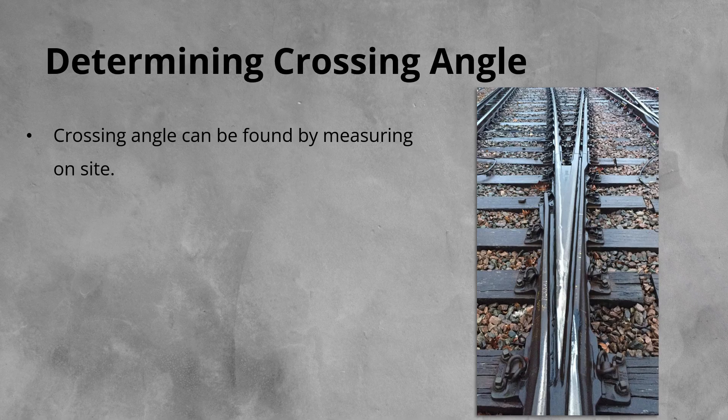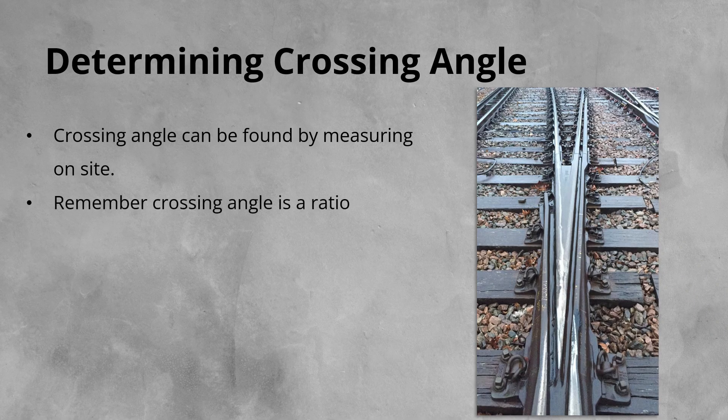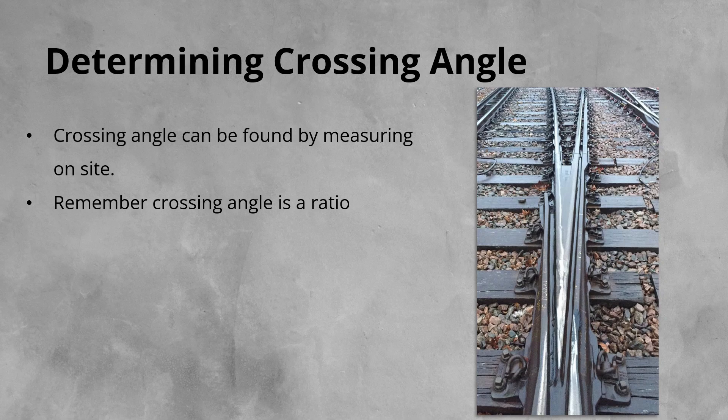Some rely on the use of the intersection point, which is not always practical on site. It is important to remember that the crossing angle is a ratio, which is the same along the length of the crossing.